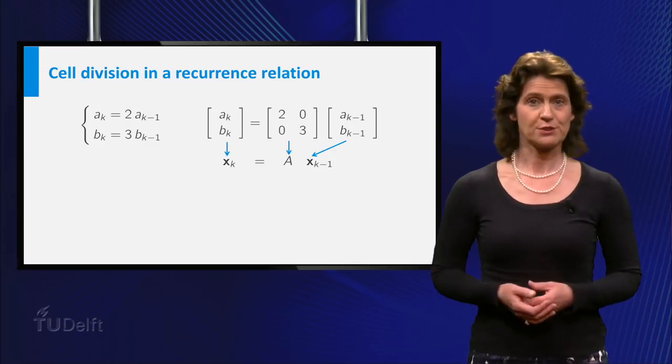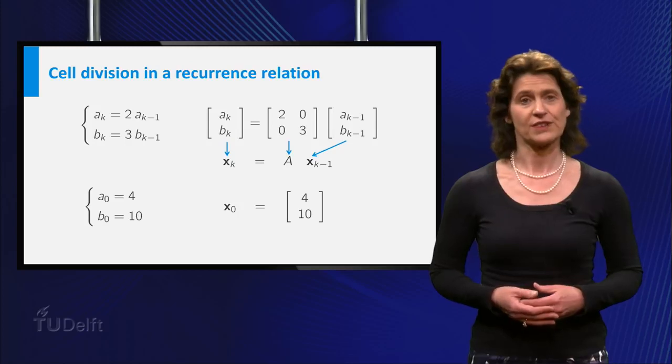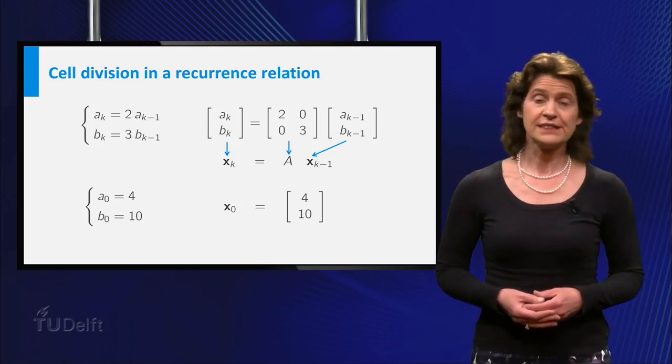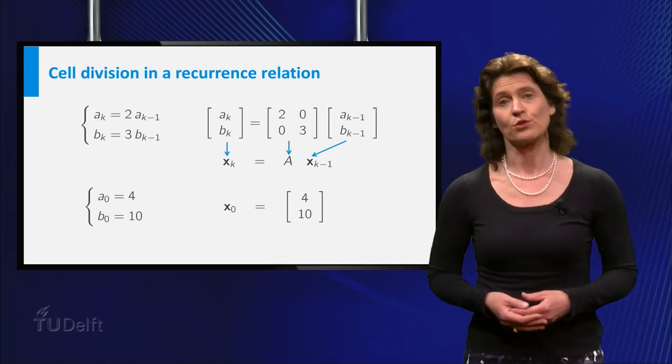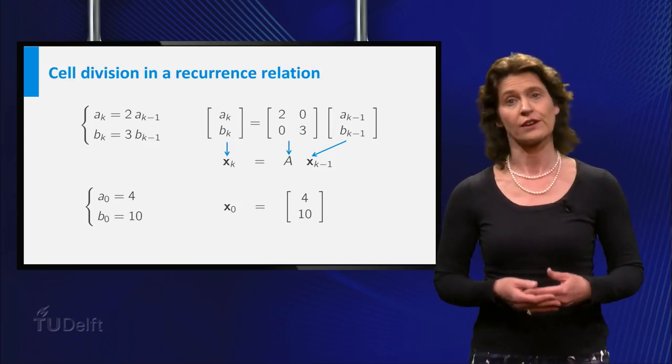Suppose you started your experiment with 4 cells of type 1 and 10 cells of type 2, then this means A0 equals 4 and b0 equals 10. So the vector x0 is equal to (4, 10).